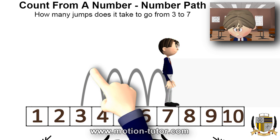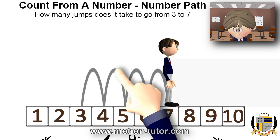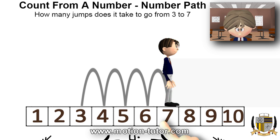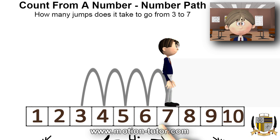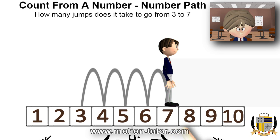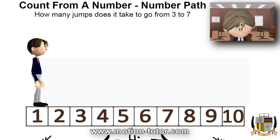See? One, two, three, four — four jumps. So that means to go from three to seven, you're adding four to three to get to seven.